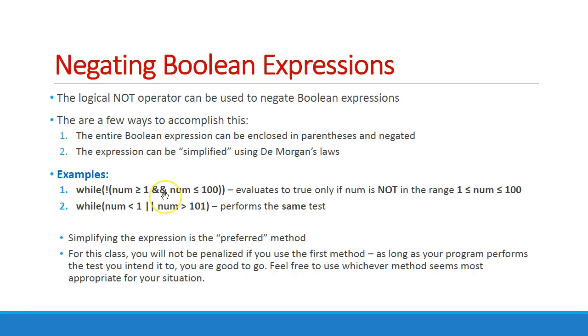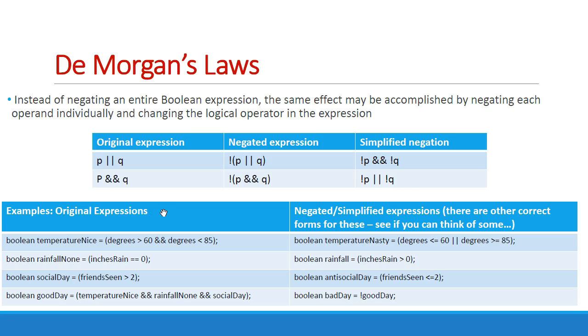Negating Boolean expressions. This is nothing you can't figure out on your own. You can negate an AND or an OR and use something called DeMorgan's Laws to figure out what the actual expression is going to be. For example, temperature nice is over 60 and less than 85. If you negate that, temperature nasty is the temperature is less than 60 or greater than 85. That's the way it works, but I wouldn't worry too much about DeMorgan's Laws.